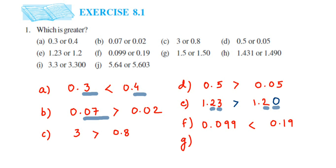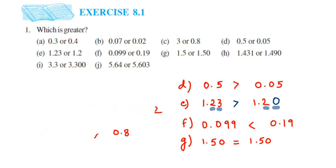The next question: 1.5 and 1.50. The whole part is 1 in both. In the decimal, the tenth place is 5 in both. The next digit: here we have 0 and there is no number, which we take as zero. Both numbers are equal — 1.5 and 1.50 are equal.